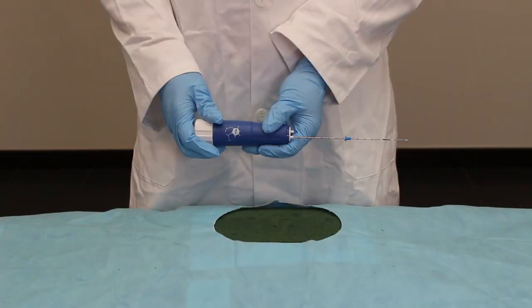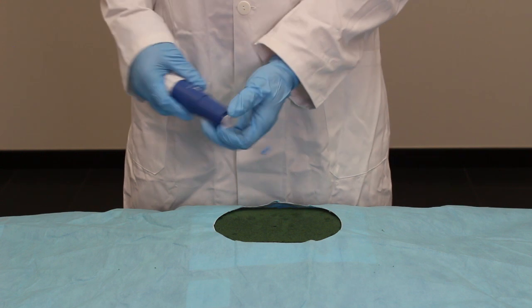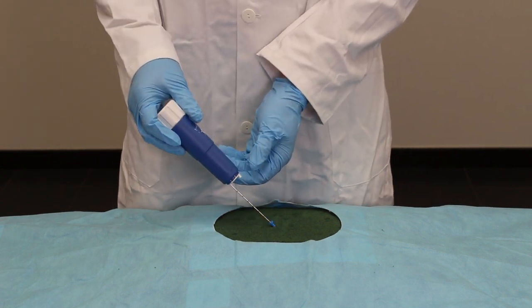If additional biopsies of the same organ are required, withdraw the stylet by rotating the end of the instrument an additional one half turn and repeat the procedure.